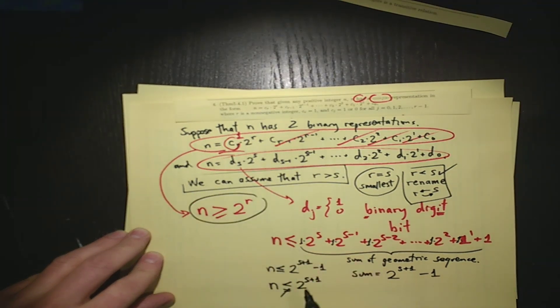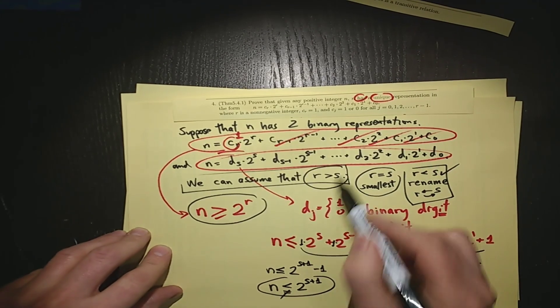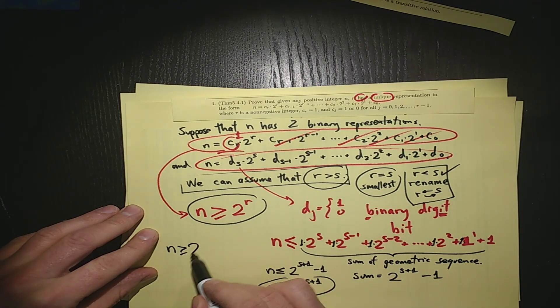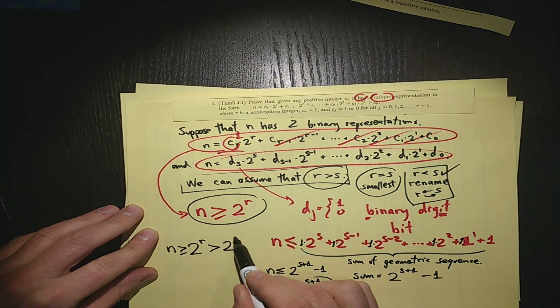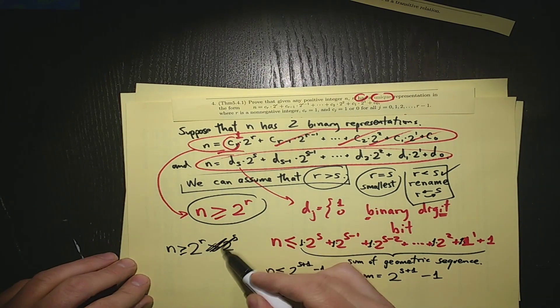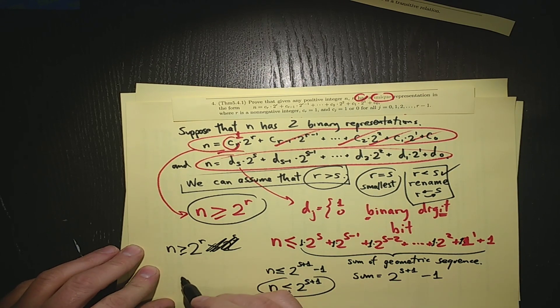So I have these two pieces of information that n is at least as big as 2 to the r, but n is strictly less than 2 to the s plus 1. And note that r is bigger than s, so that means that n is bigger than or equal to 2 to the r is actually bigger than 2 to the s. But n is, now let's scratch that, r is bigger than s, so that means that r is bigger than or equal to s plus 1. So 2 to the r is bigger than or equal to 2 to the s plus 1.